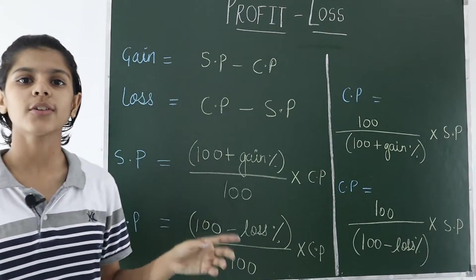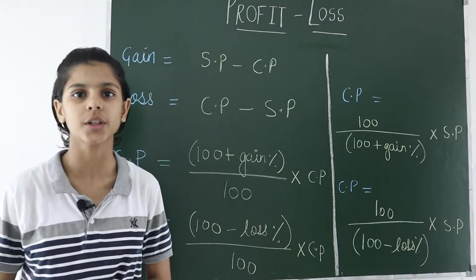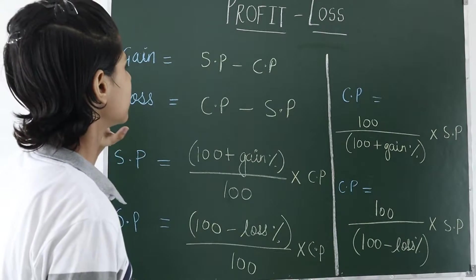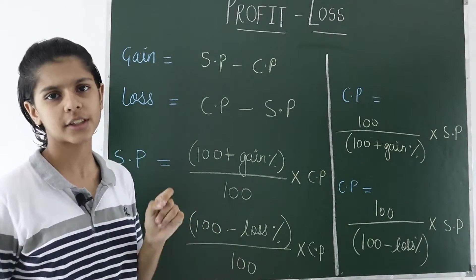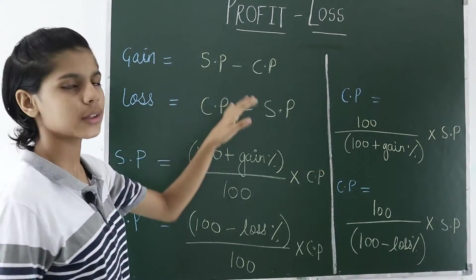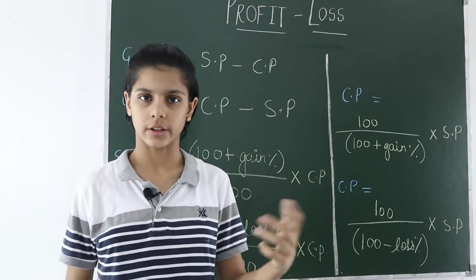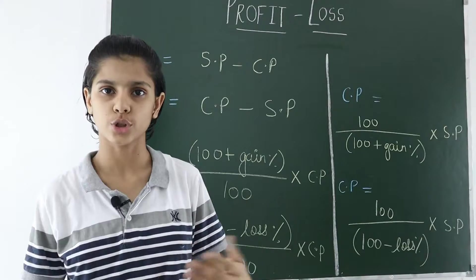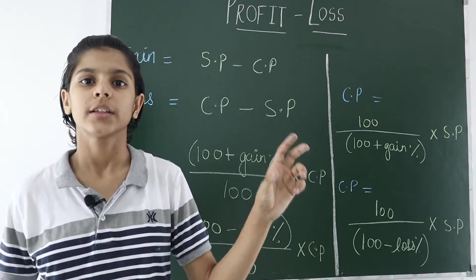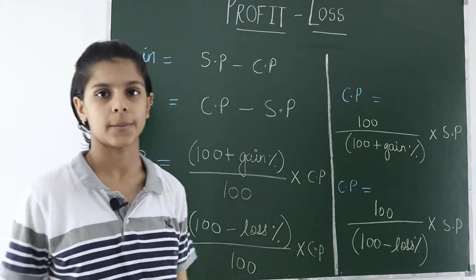We will discuss some of the formulas covered in this chapter. Mainly there are four to five terms we need to understand. First of all, SP is the selling price. For example, if I buy anything from the shop, the cost at which I have bought that object is known as the cost price or CP.